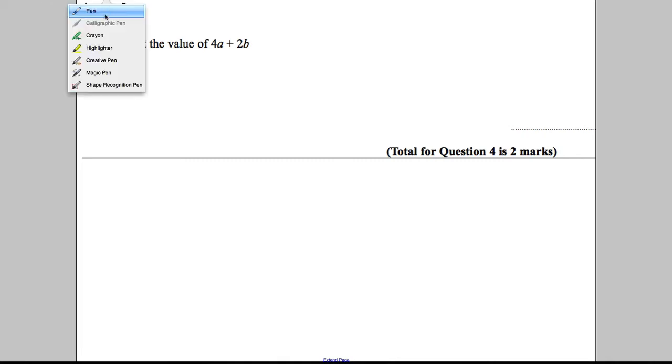Question 4, a question on substitution. We're told A is equal to 5, B is equal to 3. Work out the value of 4A add 2B.